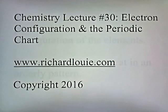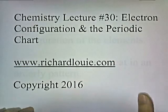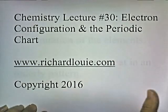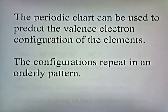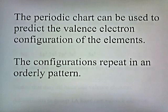Chemistry Lecture Number 30: Electron Configuration on the Periodic Chart. The periodic chart can be used to predict the valence electron configuration of the elements. The configurations repeat in an orderly pattern.